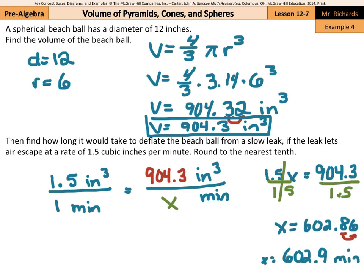That's a really slow leak, 602.9 minutes. If you divide it by 60, which would be your minutes in an hour, you could get about 10 hours as well. So we find the volume, then we set up a proportion to find our minutes.